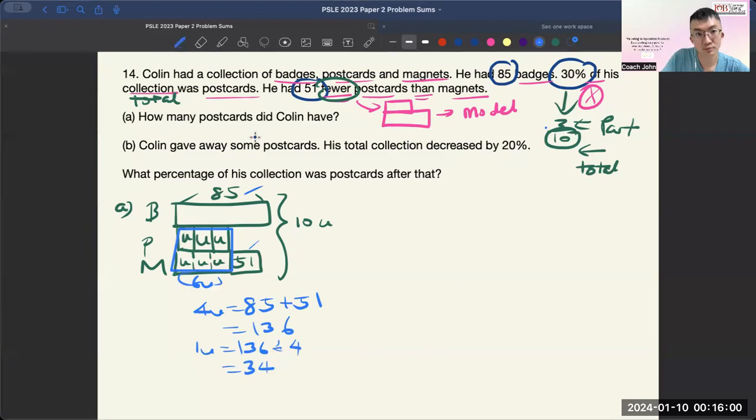And to find postcards, you have P is 3 units. So it's 3 times 34 which equals to 102.